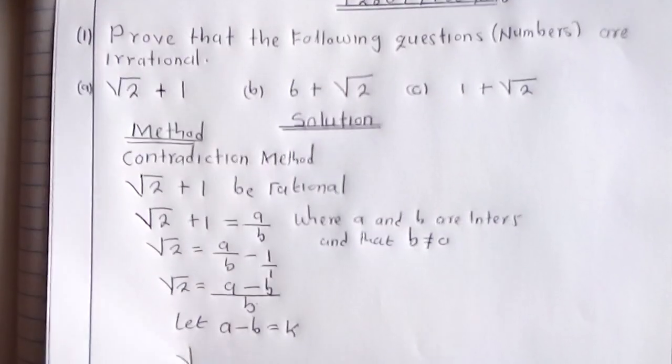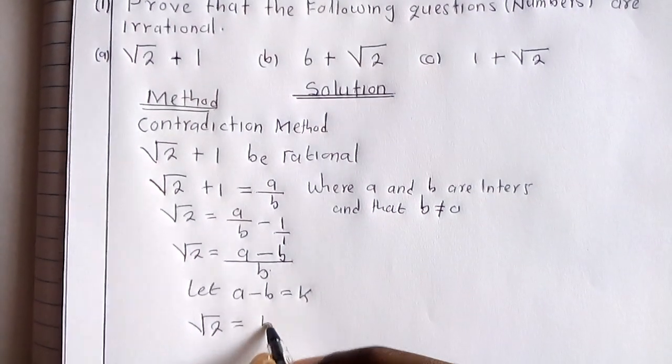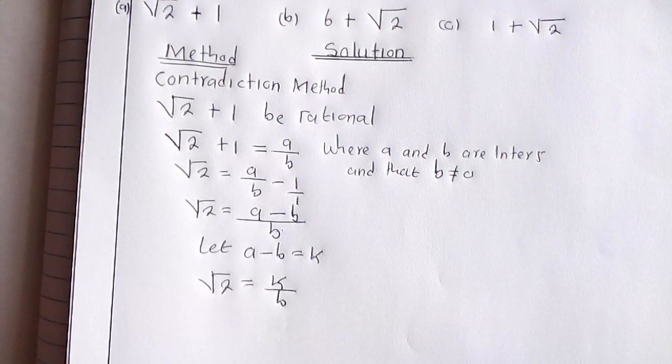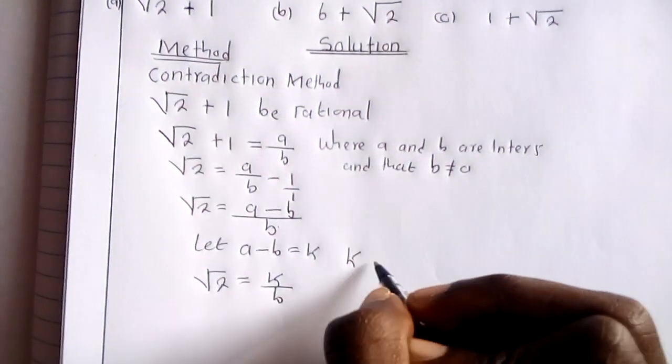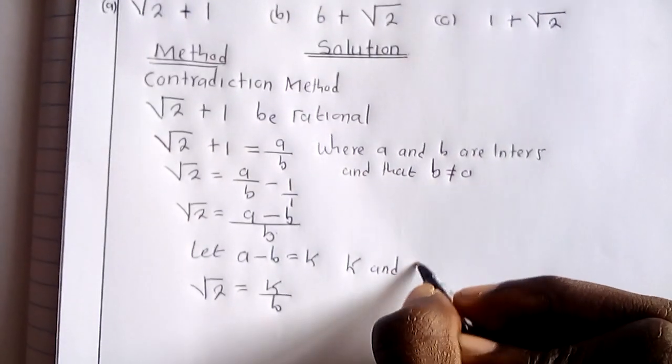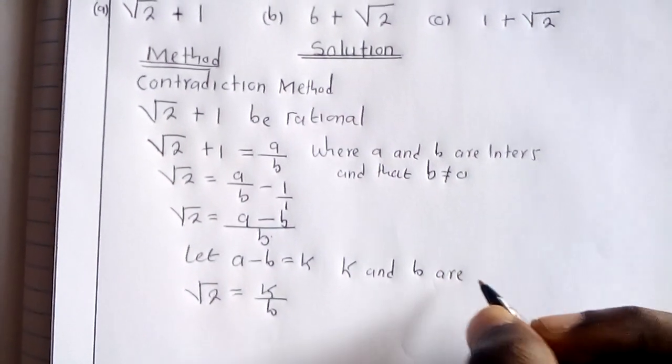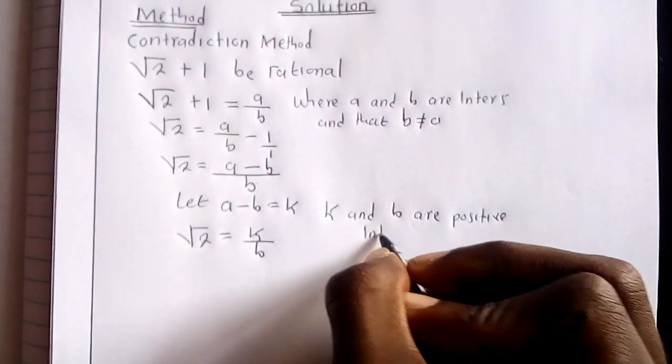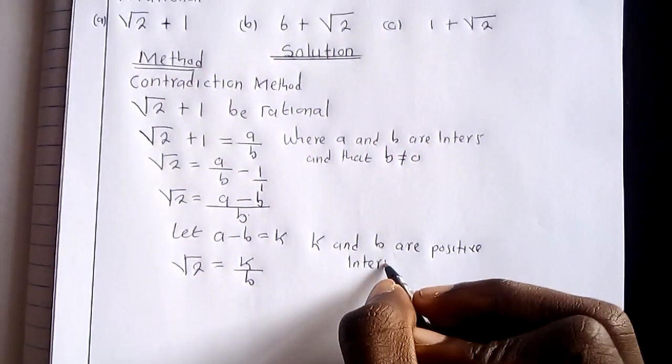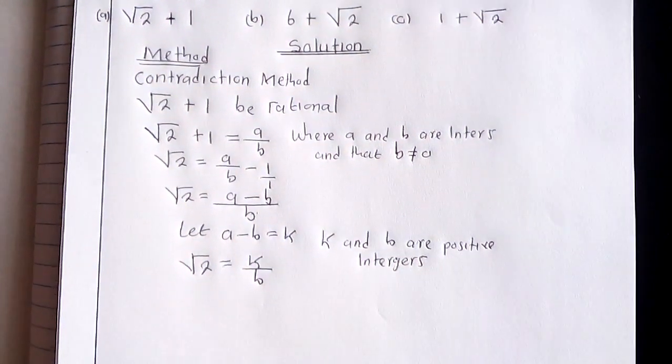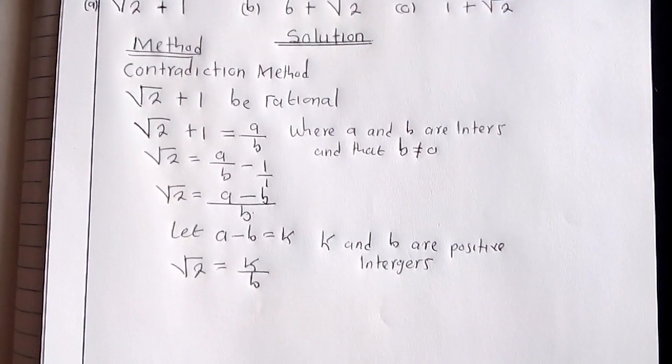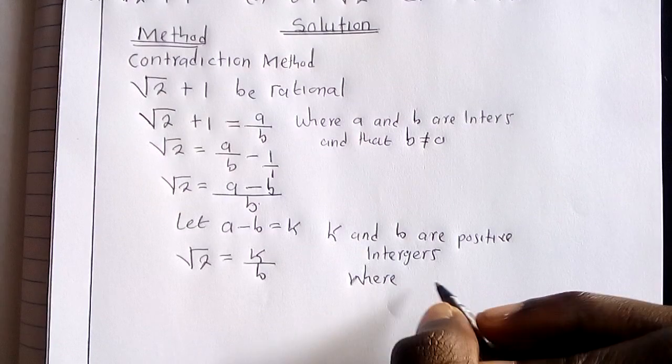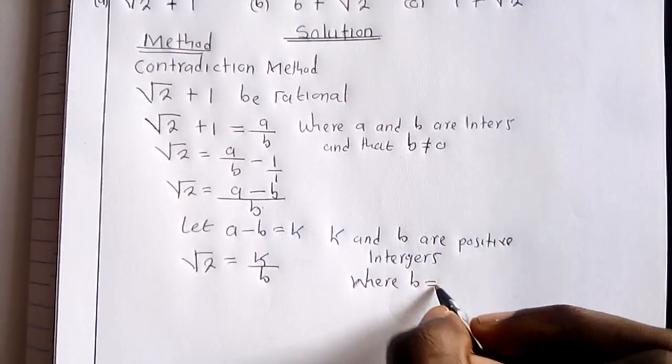Then we are going to have root 2 equal to K over B. Now K and B are positive integers, where we know that B is not equal to zero.